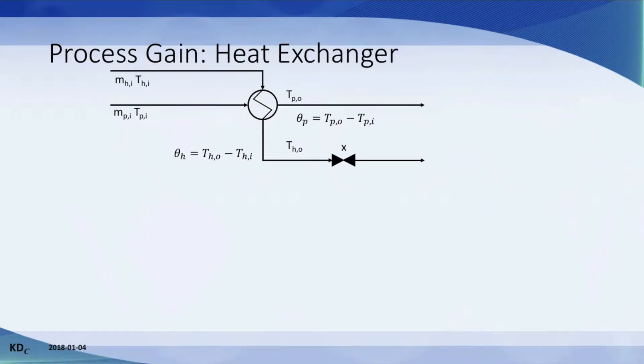On the process side, the flow rate and inlet temperature are specified. The temperature difference between the process outlet and inlet is theta p. The hot oil mass flow rate is mh, and the temperature difference between the outlet and inlet is theta h. The control valve position is x.